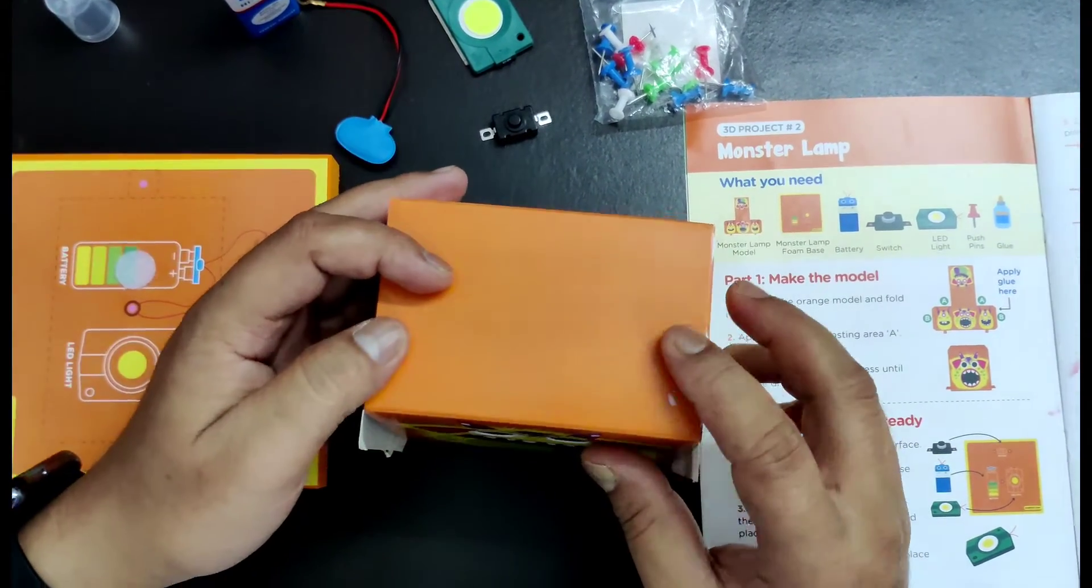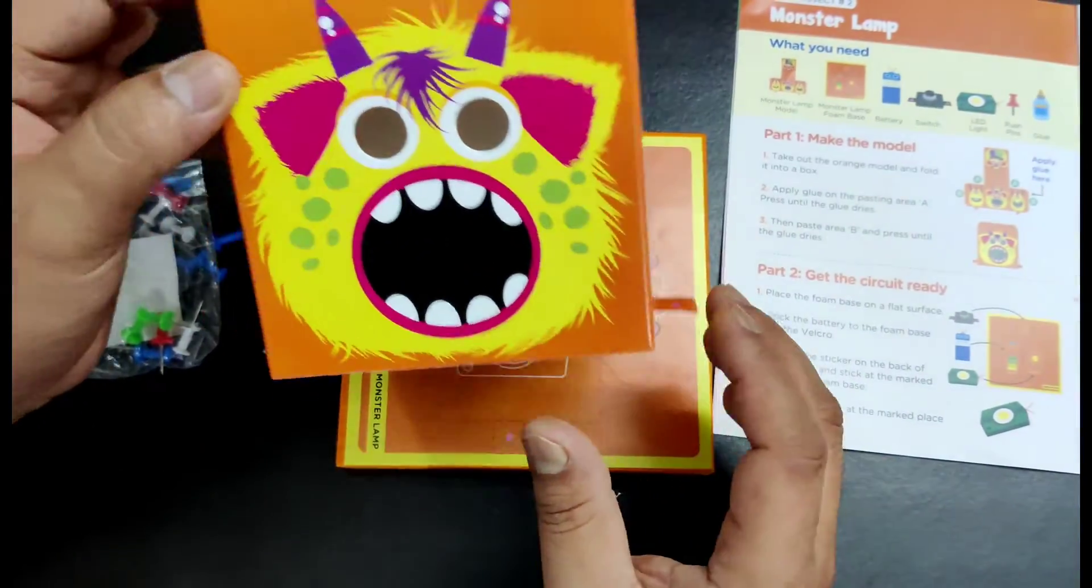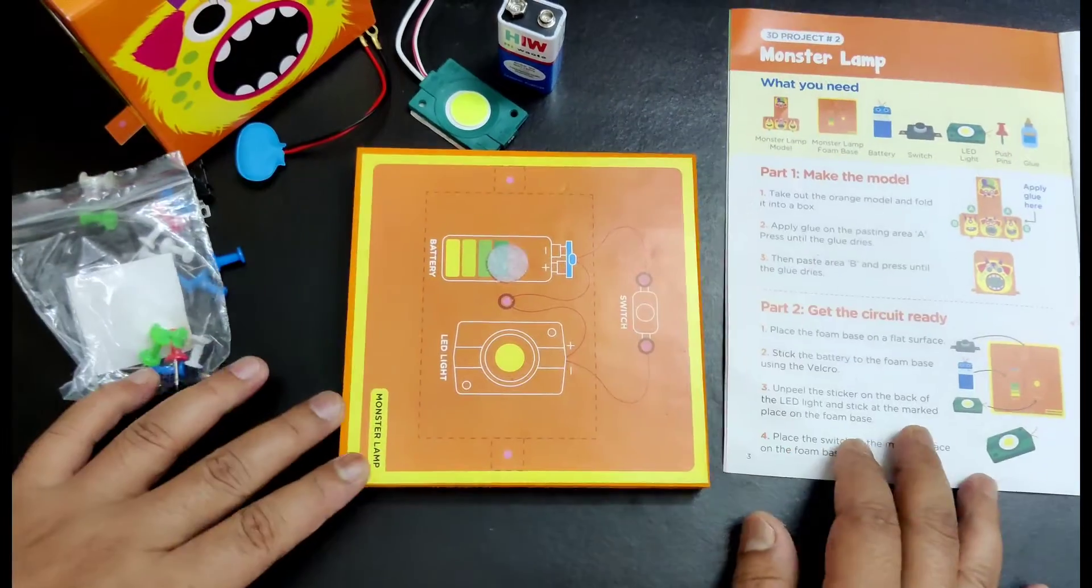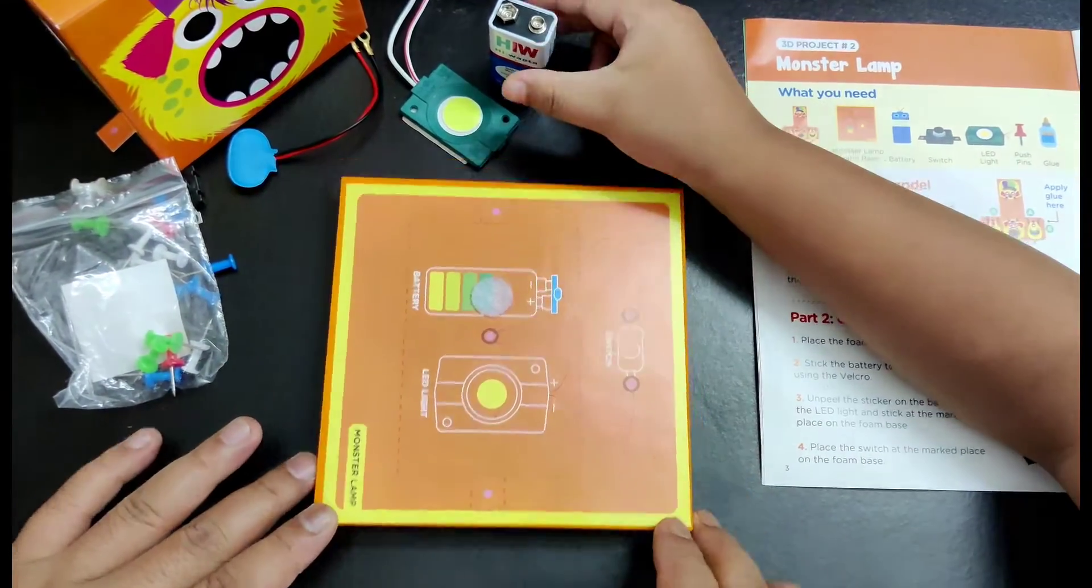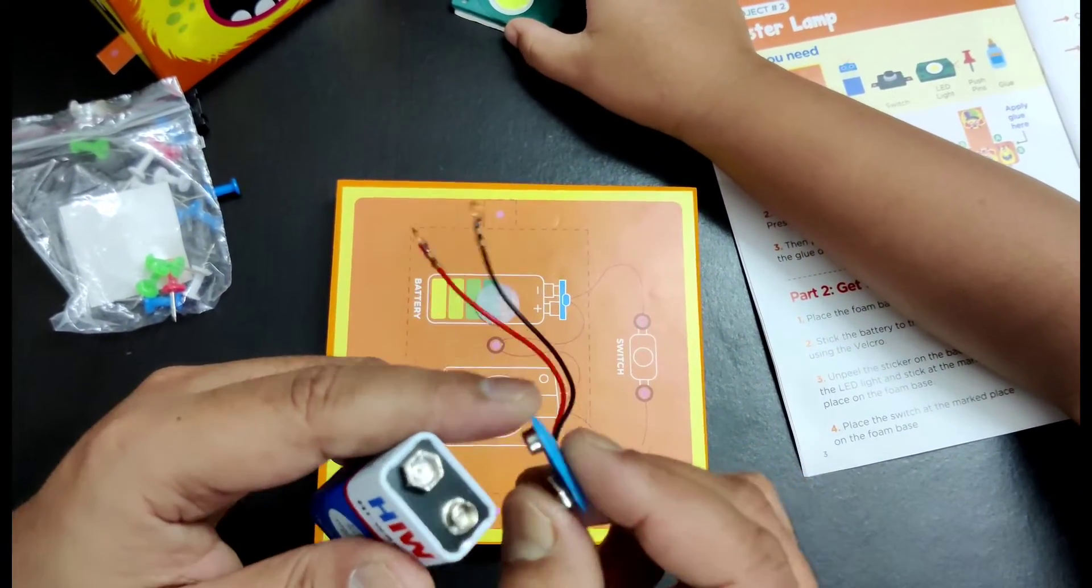All right, so guys, our monster box is ready. We have to get the circuit ready. We need to put the battery. Before I put it, let me connect the wires with the battery so it'll be much faster. Okay, easy peasy.